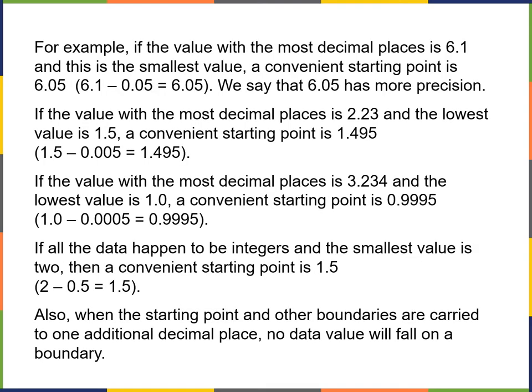For example, if the value with the most decimal places is 6.1 and this is the smallest value, a convenient starting point is 6.05 — that's 6.1 minus 0.05 — so 6.05 is more precise. If the value with the most decimal places is 2.23 and the lowest value is 1.5, a convenient starting point is 1.495.